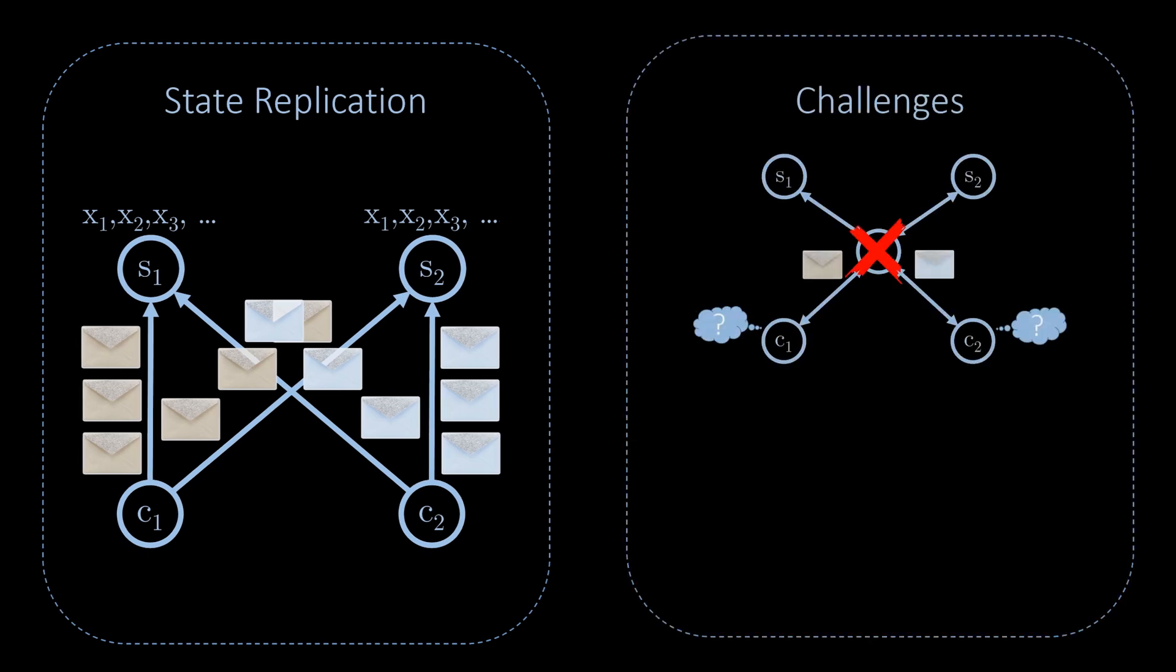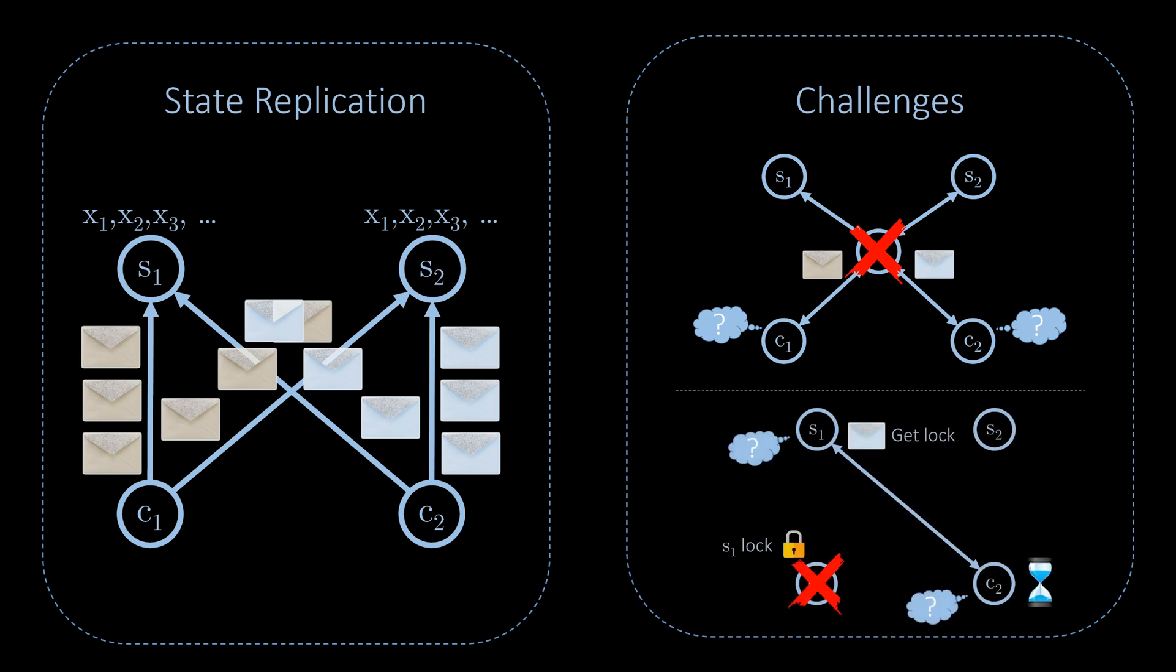We can solve the concurrency problems by introducing a centralized serializer but the serializer is a single point of failure. Instead of using a serializer, we can use locks to serialize access, but it is difficult to handle permanent server failures or the failure of clients that currently hold locks. We learned that a more flexible concept than a lock is needed to be able to deal with such failures. Thanks for watching.